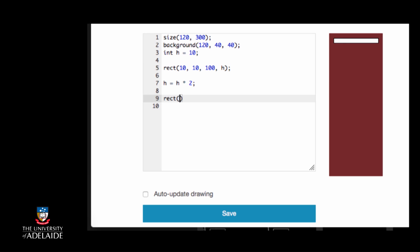So next time that we call the rect function, when it reads the value of h to specify the height of the rectangle, it now says that it should create a rectangle that is 20 pixels high.